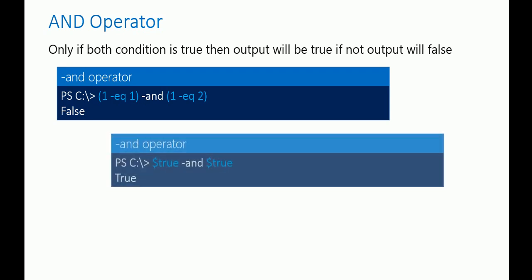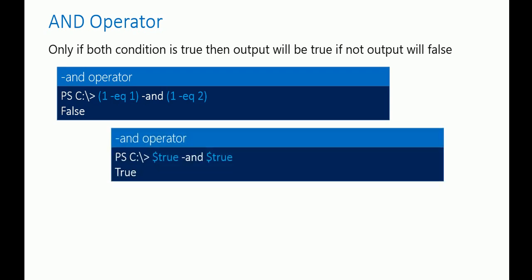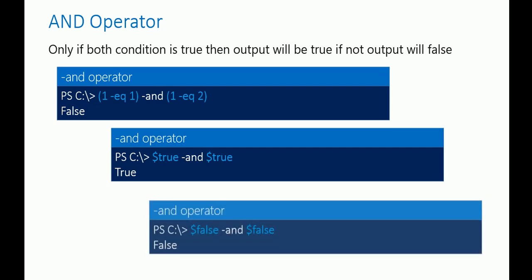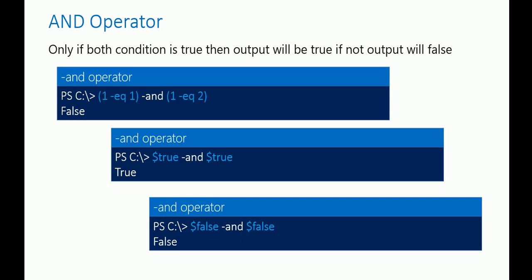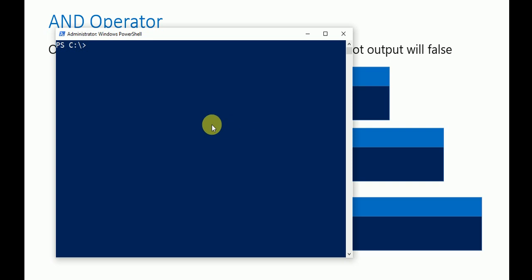Let's take another example: true AND true — if both conditions are true then the output will be true. One more example: if the first condition is false and another condition is also false, then the overall output is false. Let's try this in PowerShell.